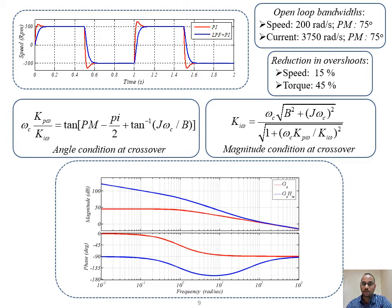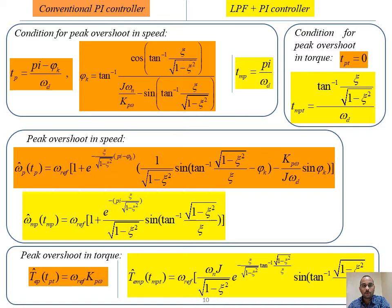For all loops, the open-loop bandwidth is set at 200 radians per second for the speed control loop, and 3750 radians per second for the current control loop, with phase margin set to 75 degrees in both cases. The analytical expressions derived for comparing the conventional PI controller and the proposed modification show that, taking zeta equal to 0.7, we can quantify a reduction in torque overshoot of 15% and speed overshoot of 45%.